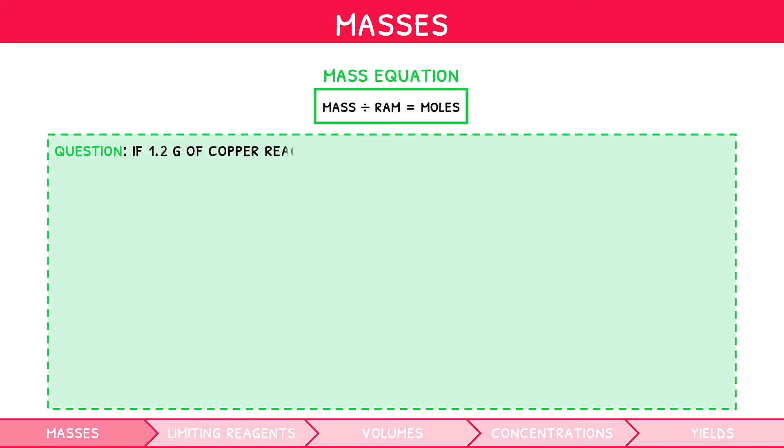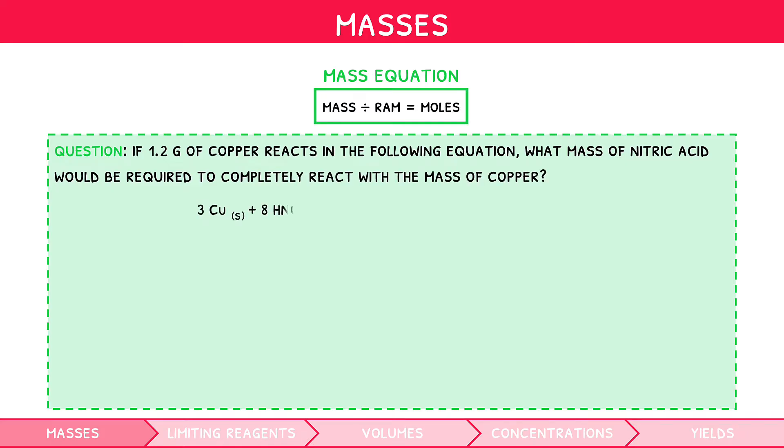If 1.2 grams of copper reacts in the following equation, what mass of nitric acid would be required to completely react with the mass of copper? Before we begin, it is important to note that the coefficients in front of each of the constituents of this equation correlate to the ratio of the number of moles of each substance. So here, for every 3 moles of copper, there are 8 moles of nitric acid.